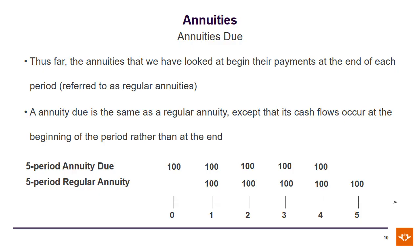Up to now, the annuities we have looked at have their payments at the end of each period. In our example, we had a 5-year annuity which paid R100 at the end of each of the 5 years. Another type of annuity is an annuity due. The difference between an annuity due and a regular annuity is that the payments for an annuity due are paid at the start of each period. So if we retain the example we have — a 5-year annuity with a R100 payment each year — an annuity due would have each of those payments take place at the start of each year.